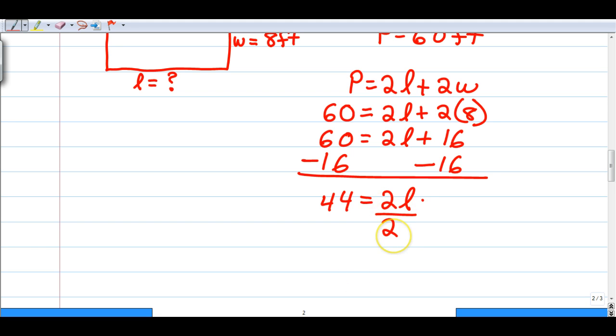Next, I want to use the multiplication principle to get the 2 out. The 2 is multiplying to the L, so I'll divide by 2. Whatever I do to one side of the equal sign, I have to do to the other. So I come down and I end up with 22 equals L.